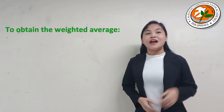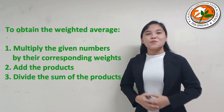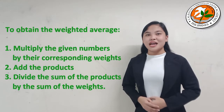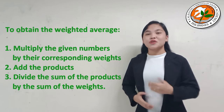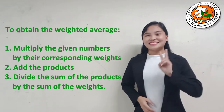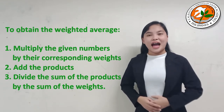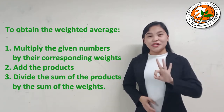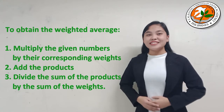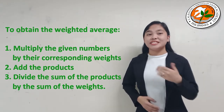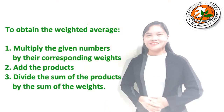To obtain the weighted average: first, multiply the given numbers by their corresponding weights; second, add the products; third, divide the sum of the products by the sum of the weights.